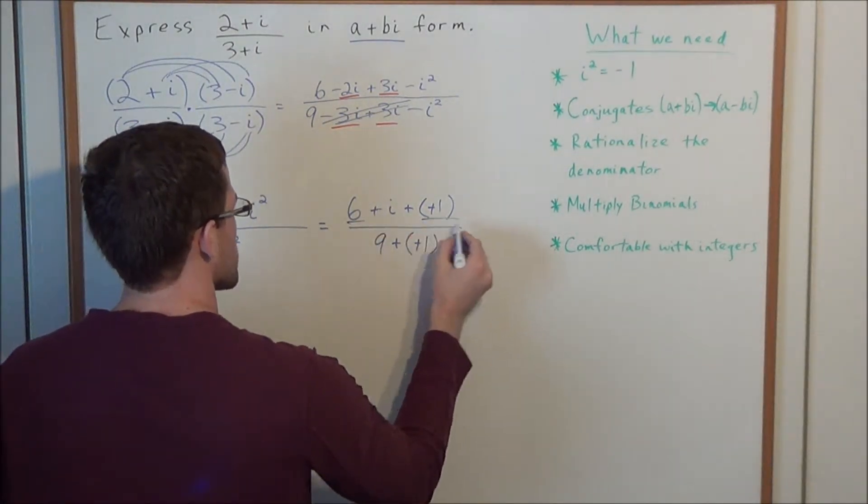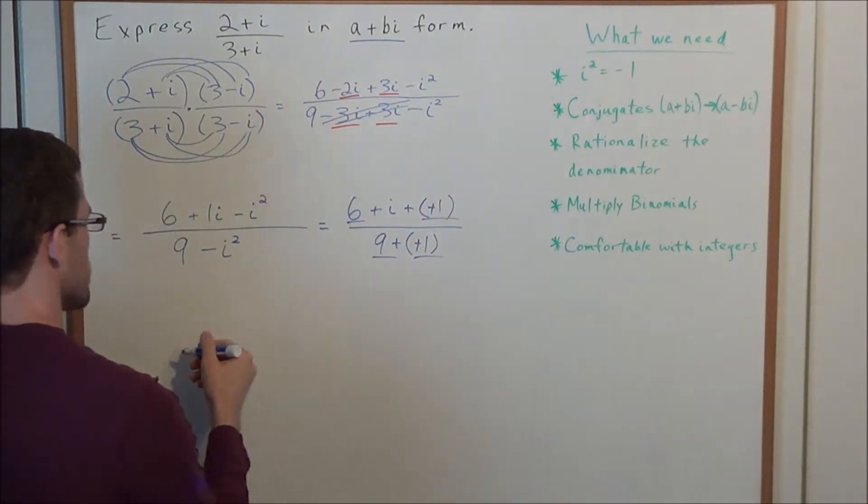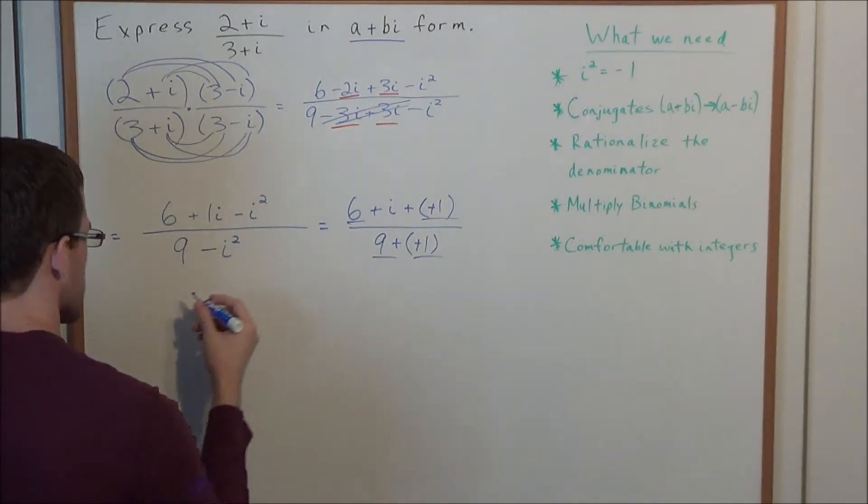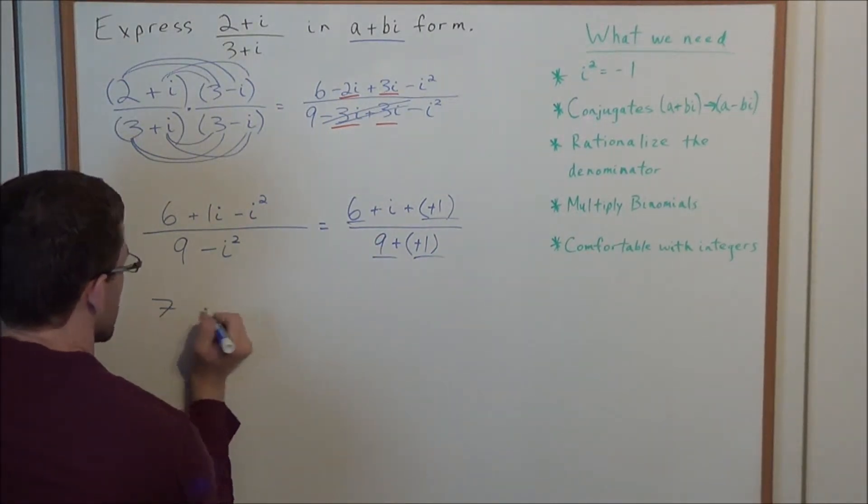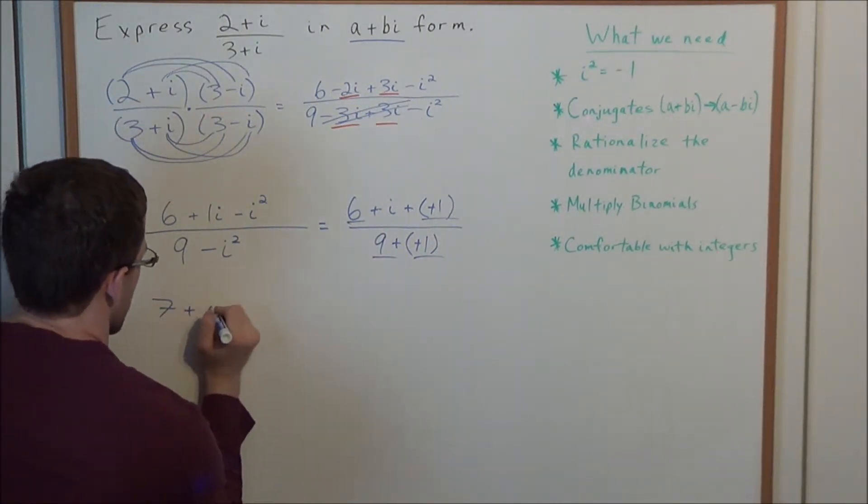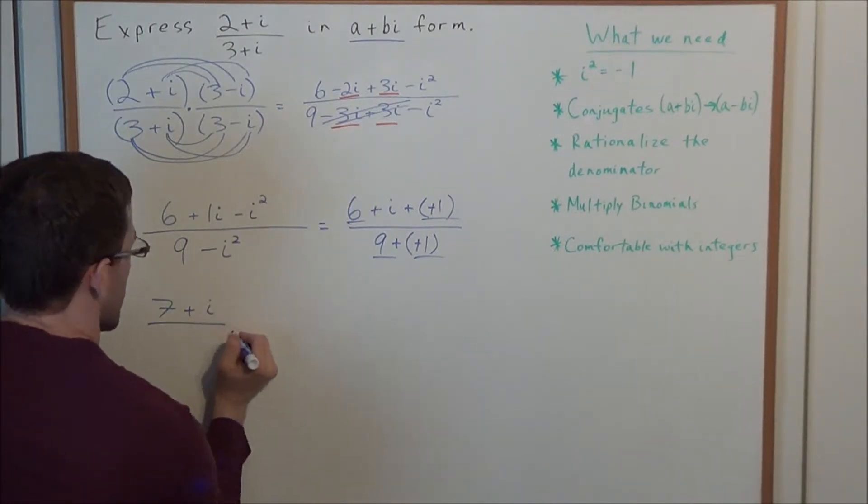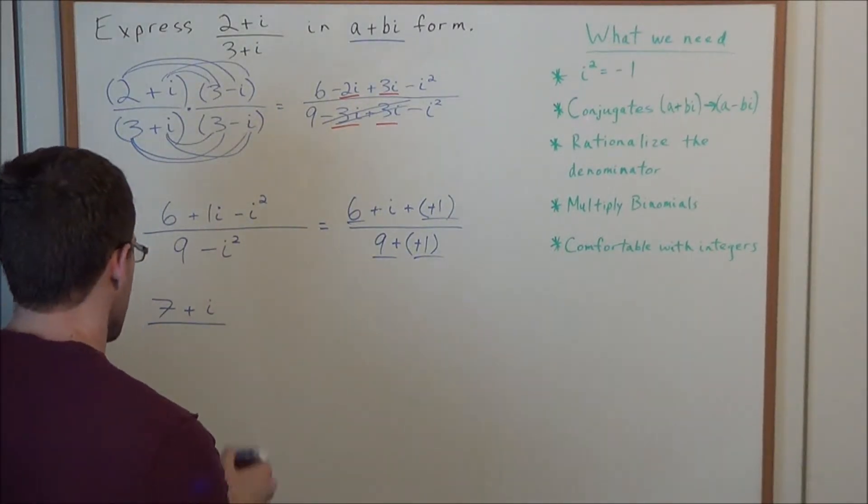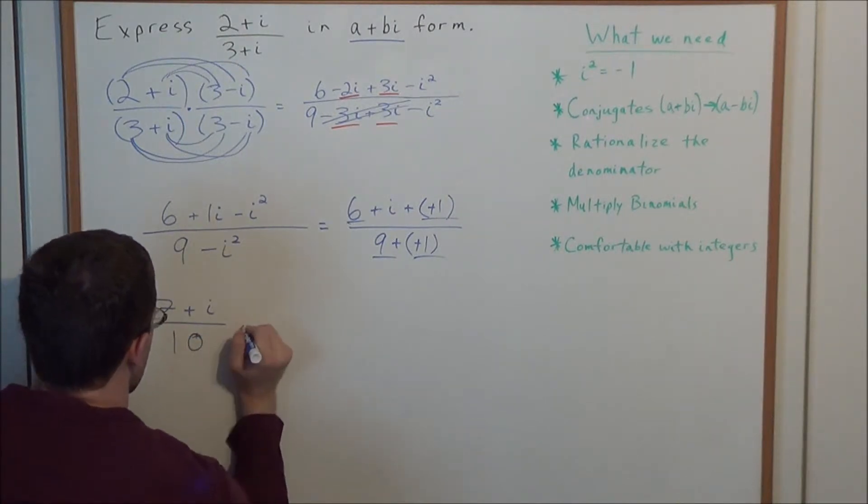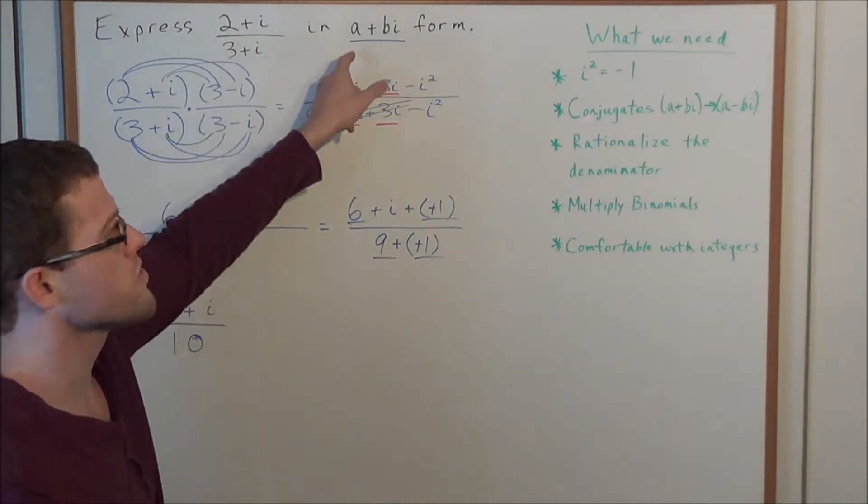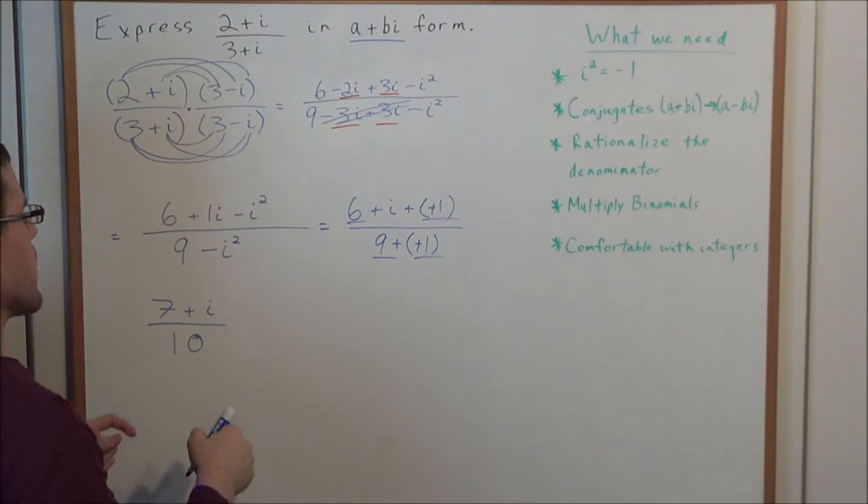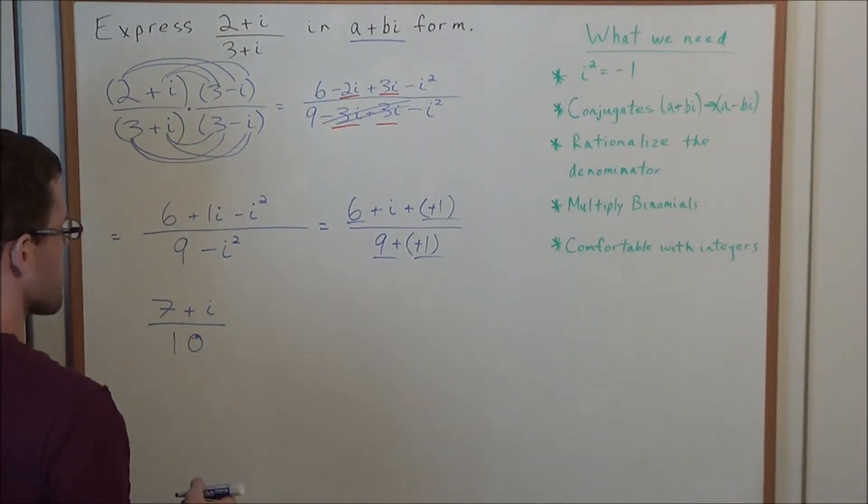But now let's go ahead and combine like terms. So the next fraction, we have 6 plus 1. So we have 7, and we have that leftover plus i. Divided by 9 plus 1, which is 10. Now it's tempting to say that we're done here, but we need our answer in a plus bi form. So let's go ahead and break this apart into two fractions.